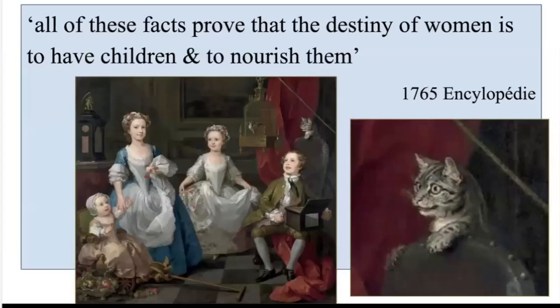And now to our Enlightenment texts. The 1765 encyclopedia entry on the skeleton used fully half its text in differentiating male and female bones and ended with the statement that, quote, 'all of these facts prove that the destiny of women is to have children and nourish them.' You can see that these girls, while just children themselves, just cannot wait to start caring for babies, which is totally natural and not shaped at all by the highly structured environment around them. Not at all.